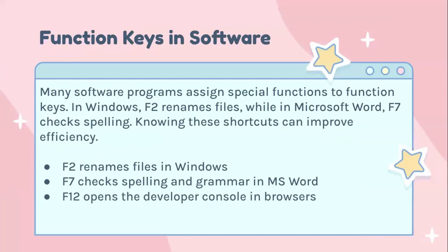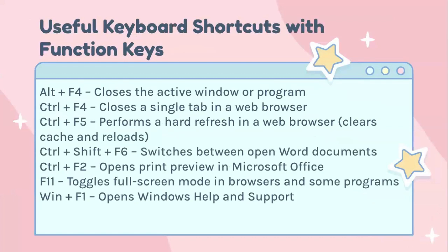Many software programs assign special functions to function keys. In Windows, F2 renames files, while in Microsoft Word, F7 checks spelling. Knowing these shortcuts can improve efficiency. Some useful shortcuts: Alt+F4 closes the active window or program, and Ctrl+F4 closes a single tab in a web browser.